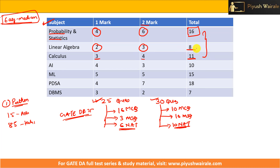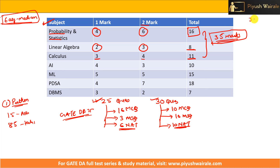If you observe carefully, the mathematics and statistics part is nearly 35 marks. So out of 85 marks, 35 marks were based on Probability & Statistics, Linear Algebra, and Calculus. This will be the case in next year's DA paper also. You can expect a similar figure around 35 marks for this section.